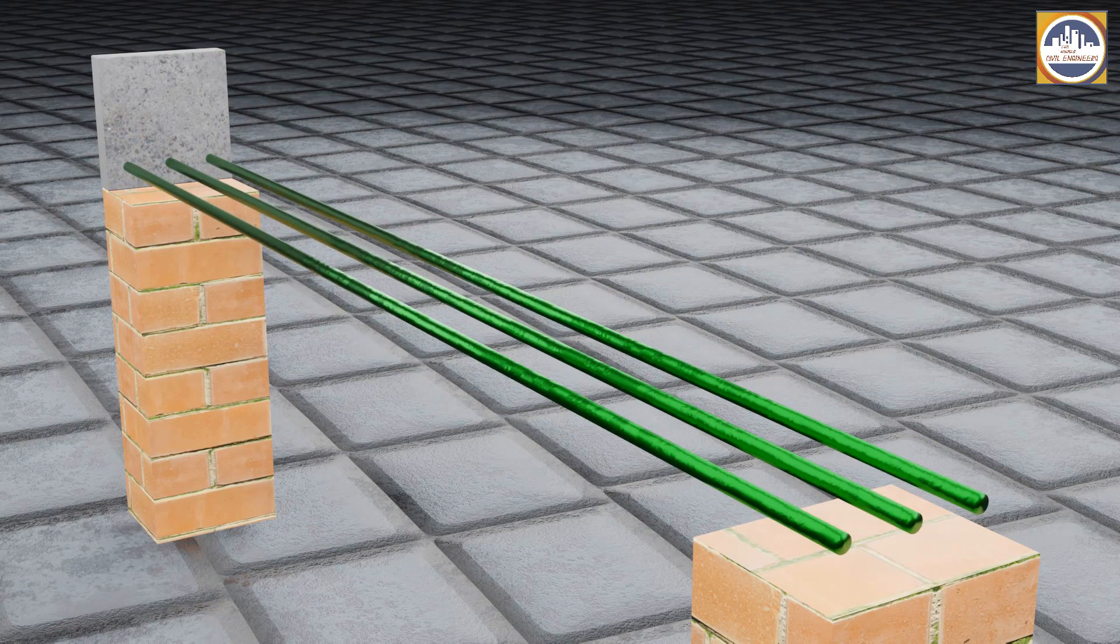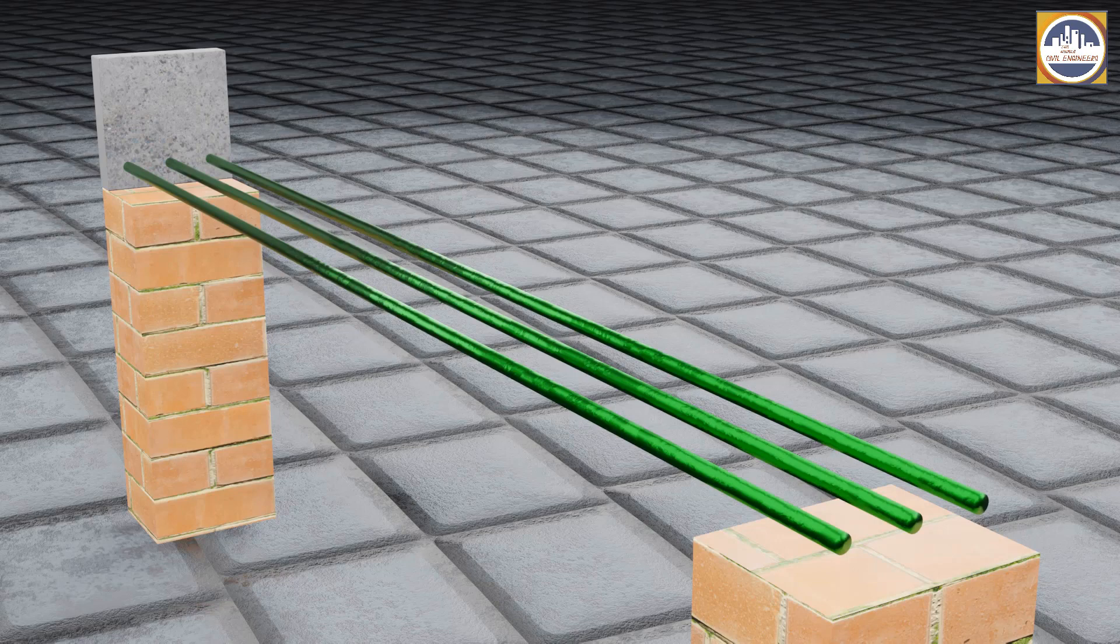As you are seeing here, these green color bars are the main straight bars in the beam which will be taking care of the bending moment of the beam.